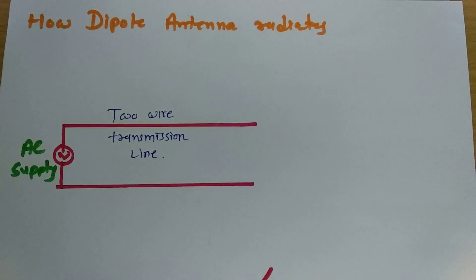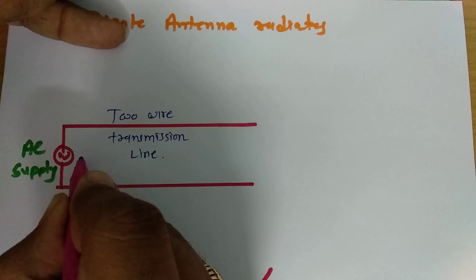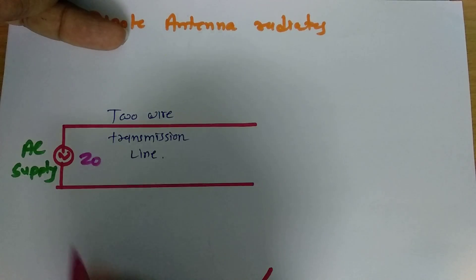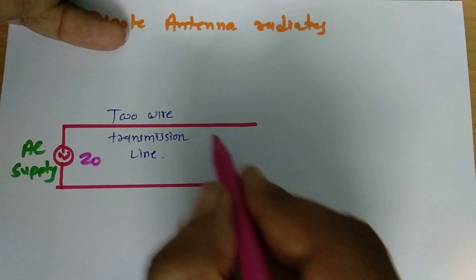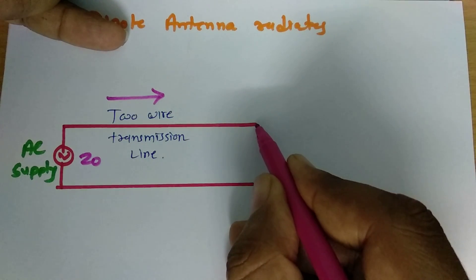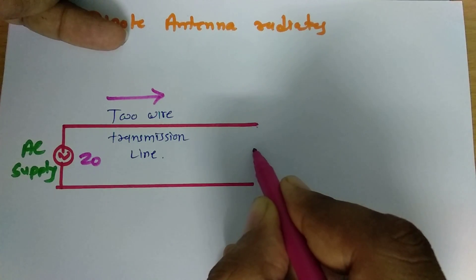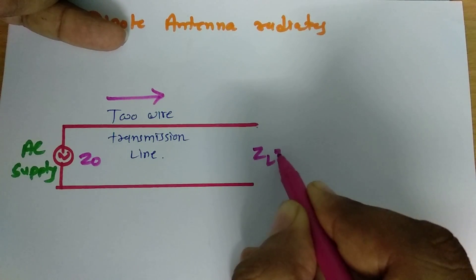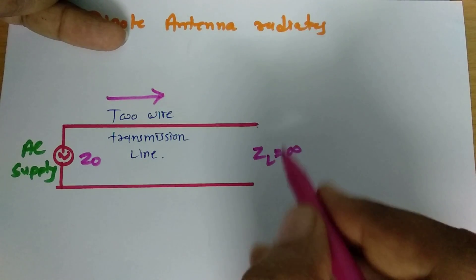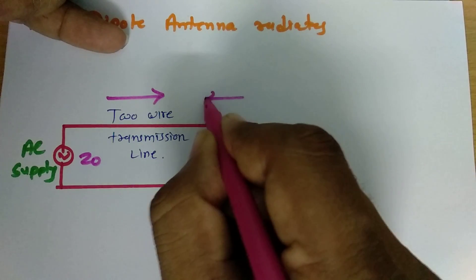With this transmission line, as we give AC supply, the signal will propagate in this direction. The characteristic impedance will be Z0. When the signal reaches the far end, the impedance ZL there is almost infinite, so the signal will get reflected back in this direction.